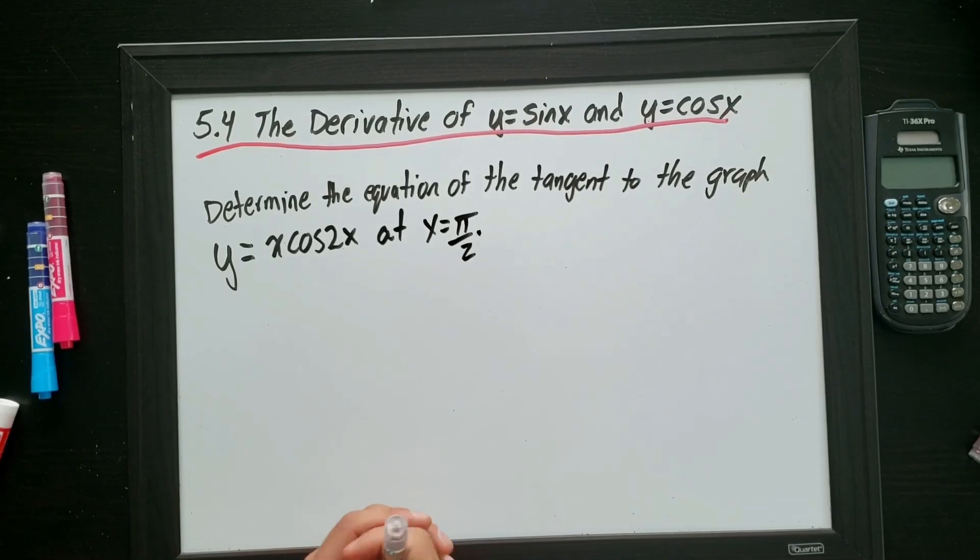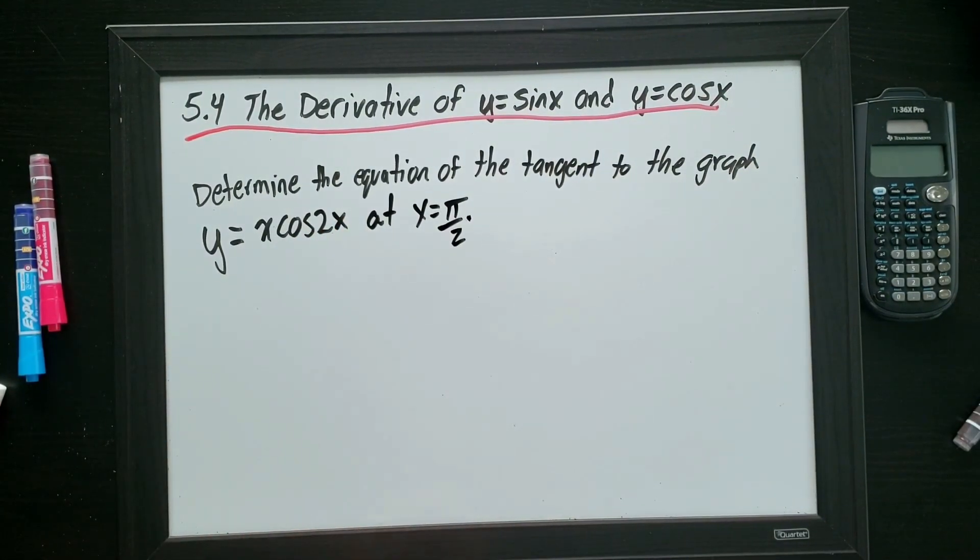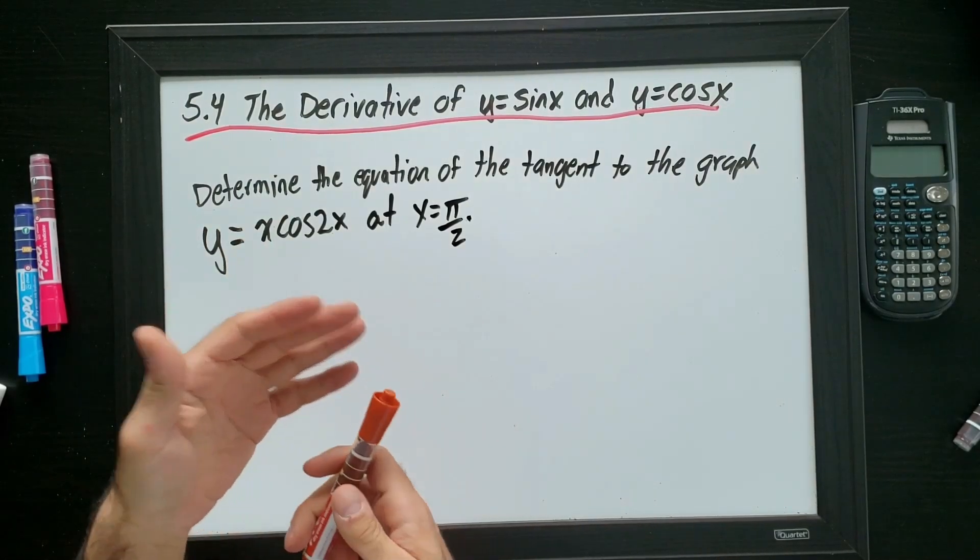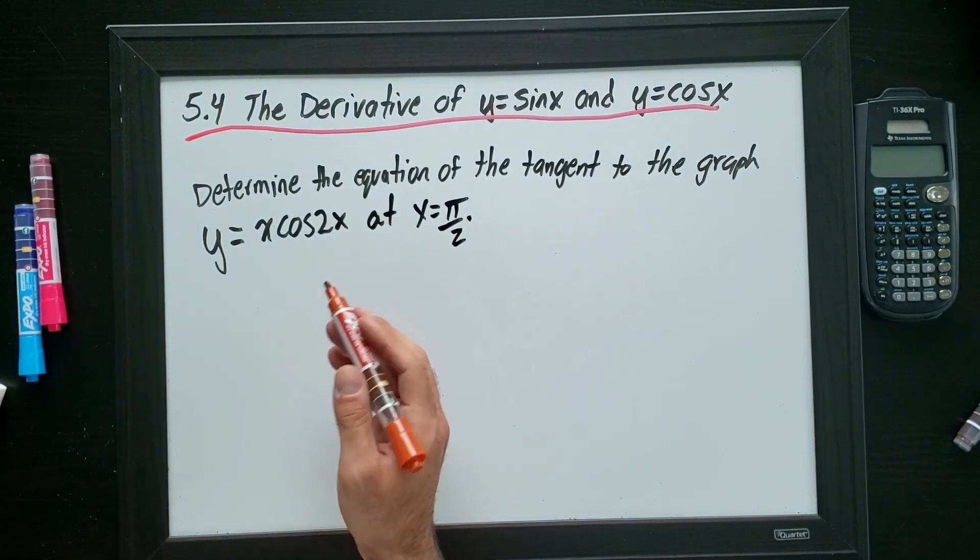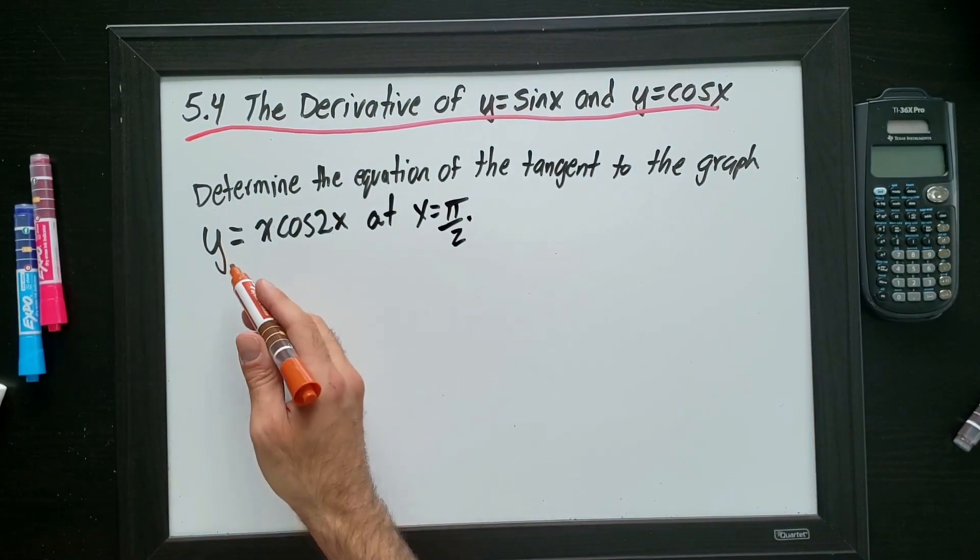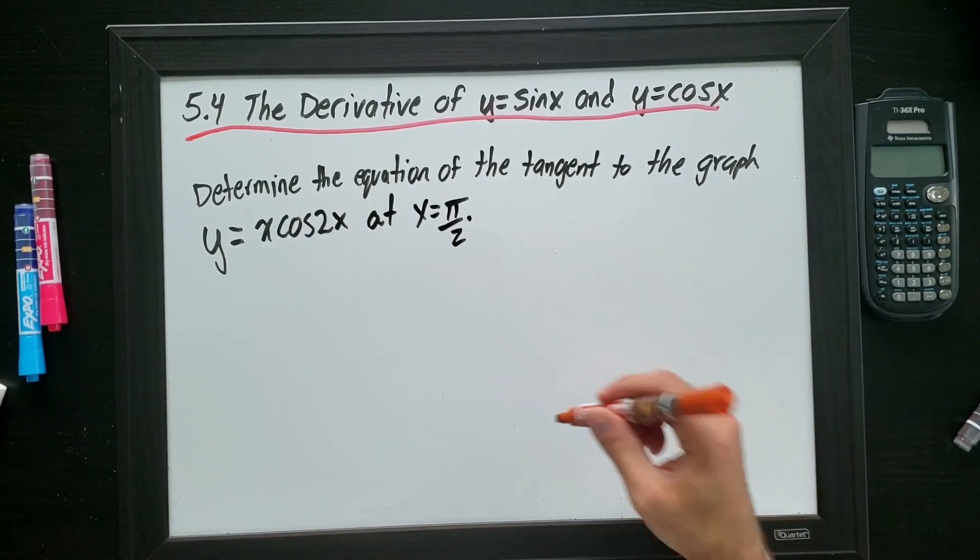Okay. So the final question in this section is going to be finding the equation of a tangent to a graph at a particular point. Okay. So when you have a scenario like this, we have to find the equation of a tangent. We need slope. We need technically the y-intercept. And that's the equation of a tangent. So the first thing I've got to do is find the derivative. But I could also find the point of tangency.